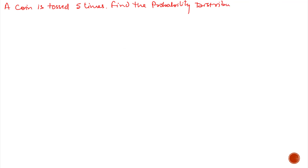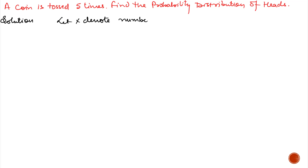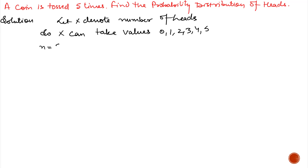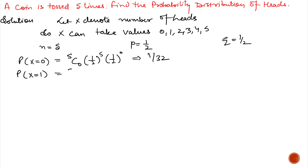We can also solve the last question using the binomial distribution, because the coin is tossed 5 times and occurrence of head is considered to be success. Let X denote the number of heads, so X can take values 0 to 5. Since the coin is tossed 5 times, n equals 5. The probability of head is 1 by 2, which we call p, and probability of tail is 1 by 2, which we call q. So n is 5, p is 1 by 2, and q is 1 by 2. We use the formula nCr multiplied by q raised to power (n minus r) and p raised to power r, and using this we can calculate probability of 0, 1, 2, 3, 4, and 5.